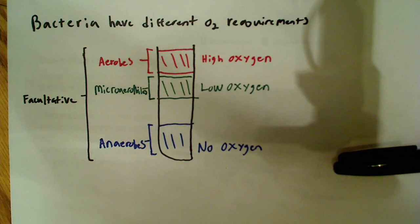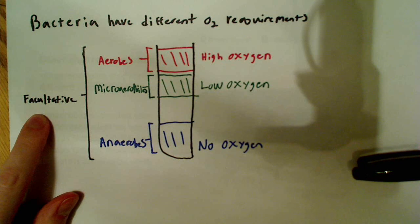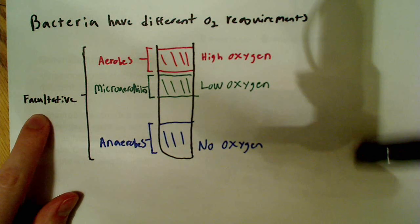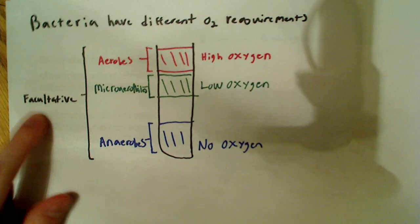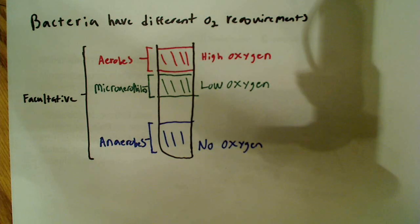They would be killed in most cases if they didn't have them. And if you have any facultative anaerobes in here, they can grow under any of these conditions. Oxygen present, oxygen not present, it doesn't really matter to them.